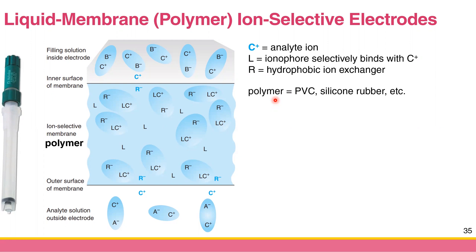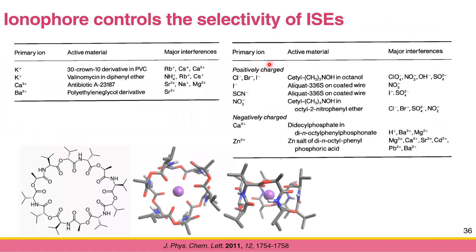This kind of membrane electrode is special because you can synthesize many forms of L, allowing detection of almost every single ion. For example, for potassium you can use a 30-crown-10 derivative, but importantly, as a chemist you should know that potassium ion selectively binds with valinomycin. This is the structure of valinomycin — computational modeling shows it can selectively bind potassium ion.